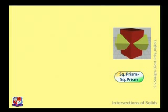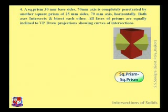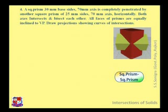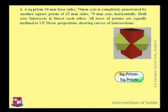Now the next problem is about square prisms. Both solids are square prisms. Given data: a square prism of 30 mm base and 70 mm axis is completely penetrated by another square prism of 25 mm sides and 70 mm axis, horizontally. Both axes bisect each other. All faces of the prisms are equally inclined to the vertical plane. Draw projections showing the curve of intersection.